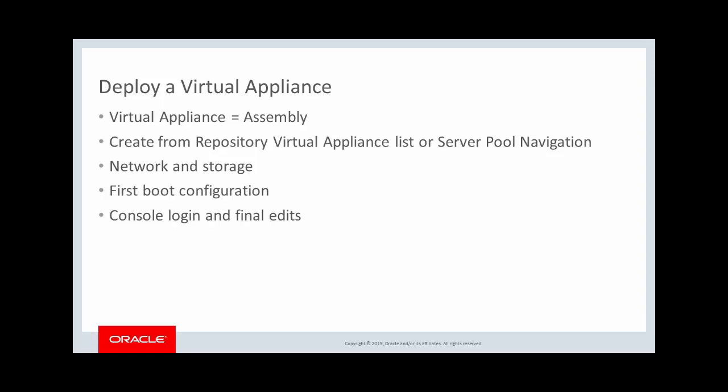To deploy the virtual appliance, you create a virtual machine in the Oracle VM Manager console interface, and there are two places you can do this. You can launch the interface from the repository virtual appliance list, which is displayed when you select the virtual appliances folder of a repository. You can also launch the interface from the top of the navigation area after selecting the Servers and VMs tab of the Oracle VM Manager console. Before deploying the virtual machine, it is best practice to have prepared the network and ensured the repository has enough capacity for the virtual disk that is created.